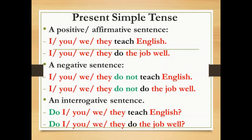An interrogative sentence: we place the auxiliary at the beginning of the sentence. 'Do I, you, we, they teach English?' 'Do I, you, we, they do the job well?' في حالة النفي والاستفهام لا داعي للتفتيش عن أي فعل مساعد آخر، وإنما نستعمل الفعل المساعد do فقط. والفعل الرئيسي دائماً يكون في حالة المصدر.